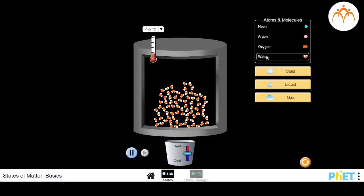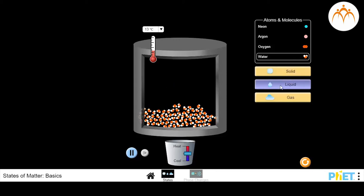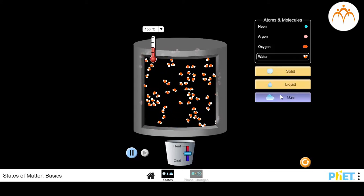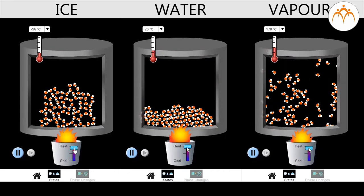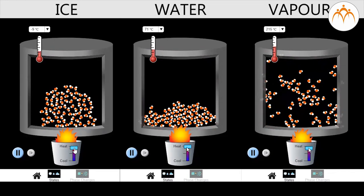Let us use this PhET simulation to explore movement of water molecules in different states. This is how molecules move around in ice, water, and in vapor. As we heat the container, movement of molecules become more random and rigorous.